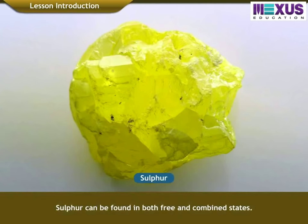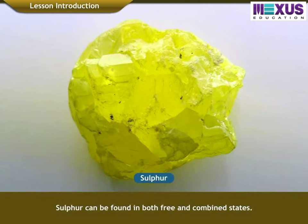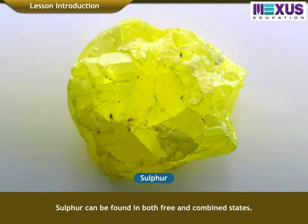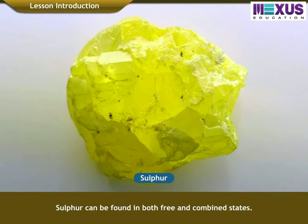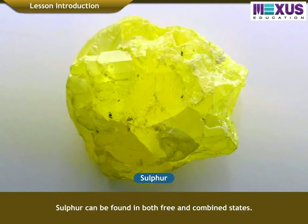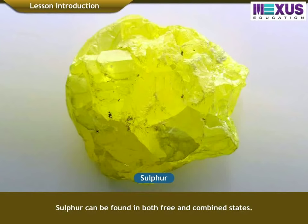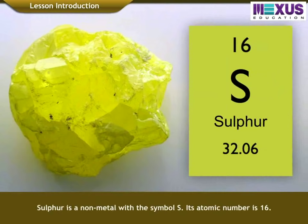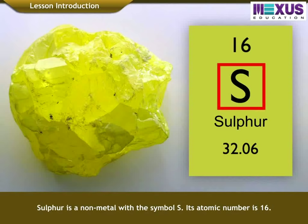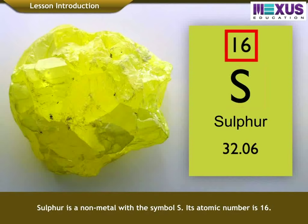Sulphur can be found in both free and combined state. Sulphur is a non-metal with the symbol S. Its atomic number is 16.